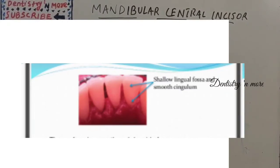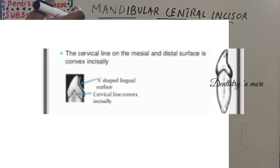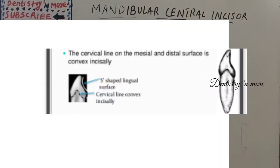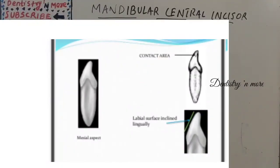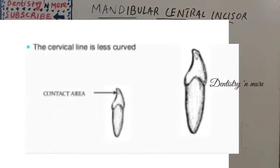On the mesial aspect, the labial outline is almost straight except near the cervical third where it is convex. The lingual margin is S-shaped. The cervical line on the mesial and distal surface is convex incisally. The labial surface is inclined lingually. The distal surface is very similar to the mesial surface, but the cervical line is less curved and the contact area is almost at the incisal third.